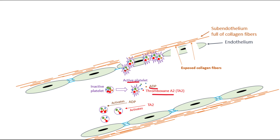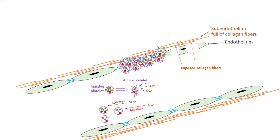This results in a greater number of active platelets, and these active platelets tend to stick together, forming a group that blocks the damage site to temporarily stop bleeding — this is the platelet plug. So aside from adhering to exposed collagen, chemicals such as ADP and thromboxane A2 can also activate platelets.